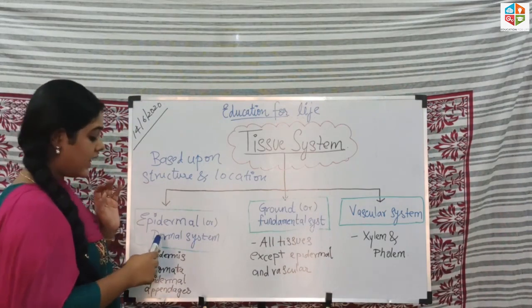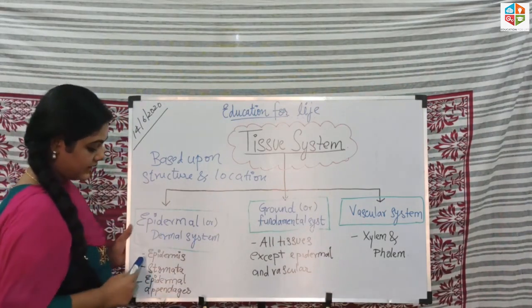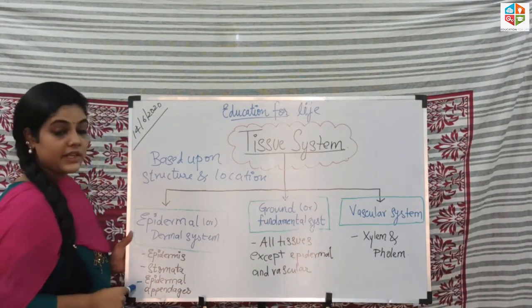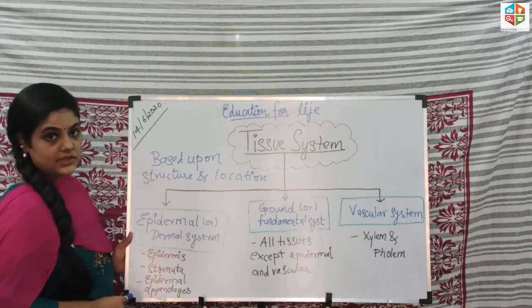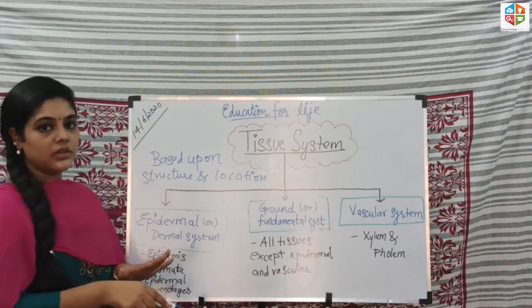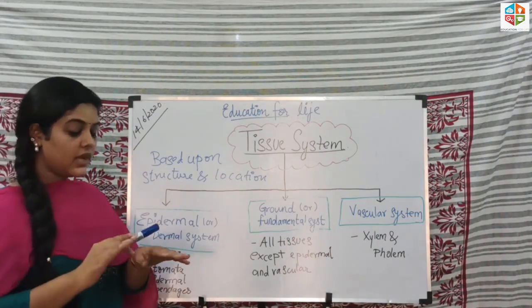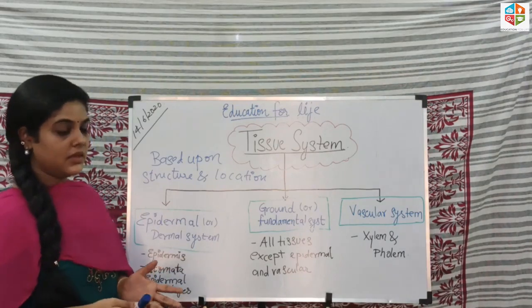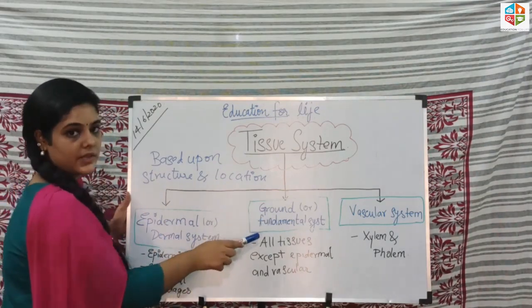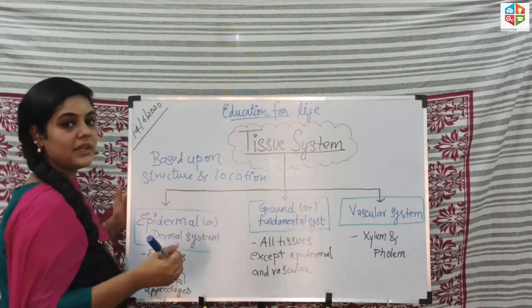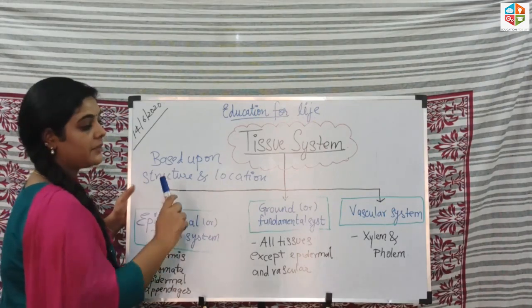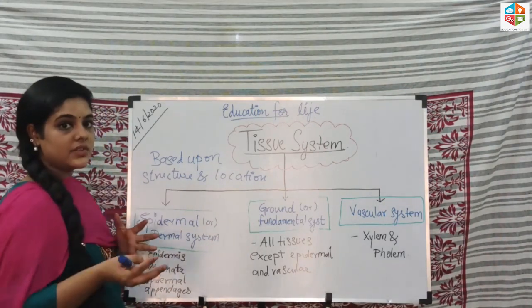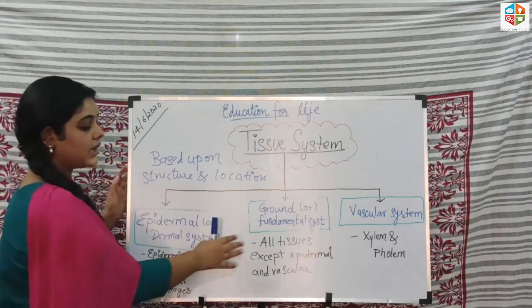The epidermal system is the outer covering of the leaf. The ground or fundamental tissue — 'fundamental' meaning basic — makes up the tissue other than epidermal and vascular. The vascular system is the complex permanent tissue.